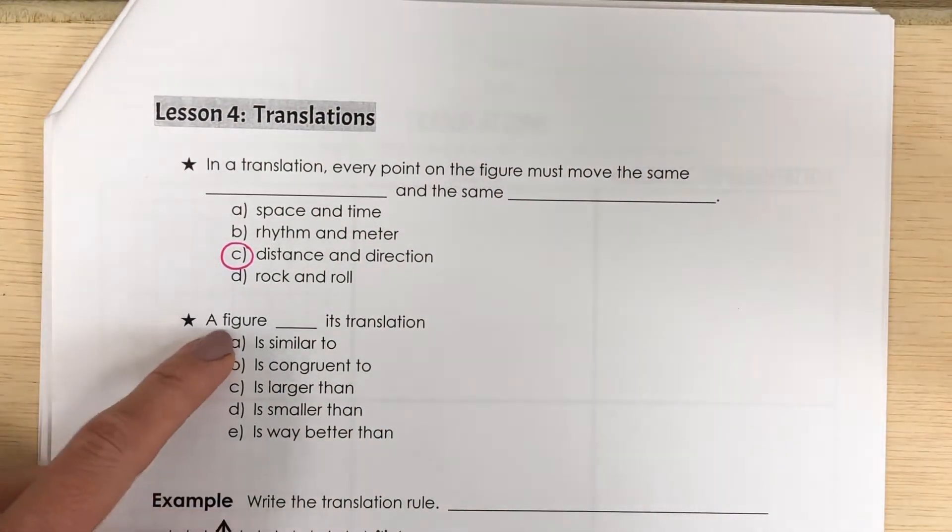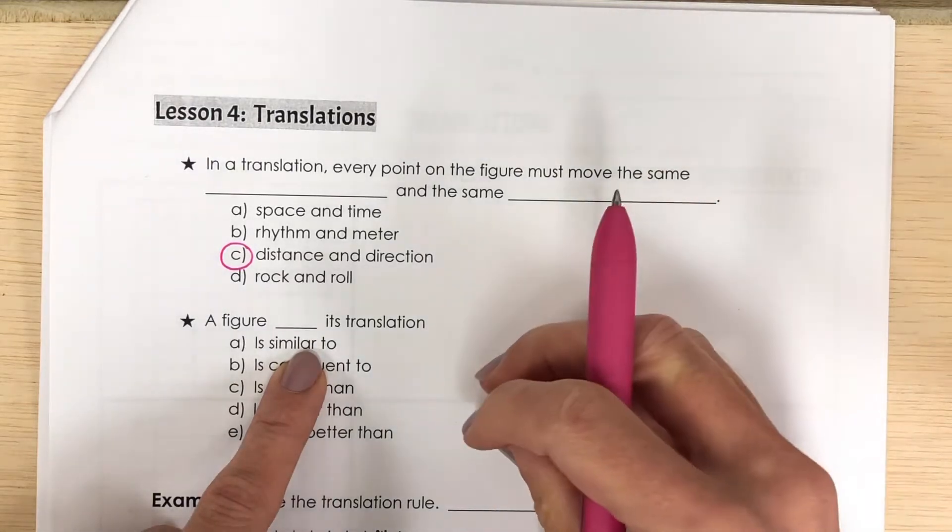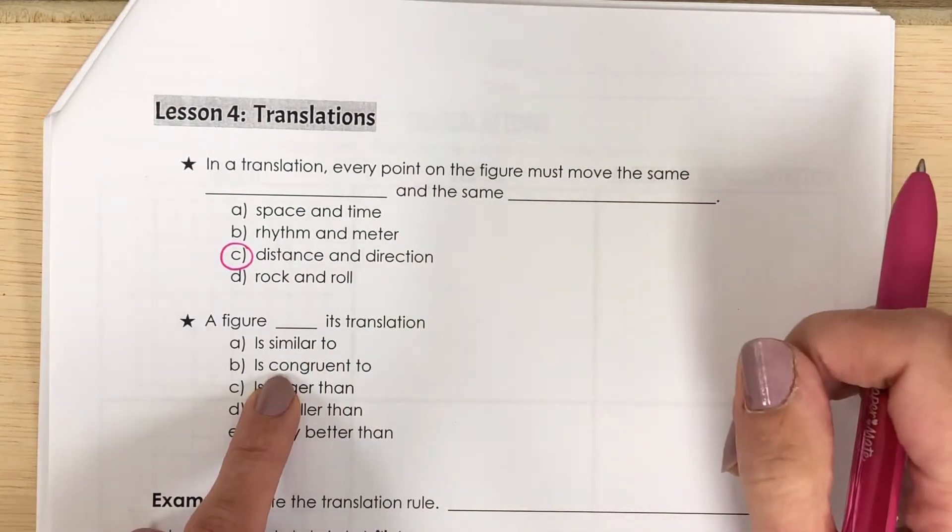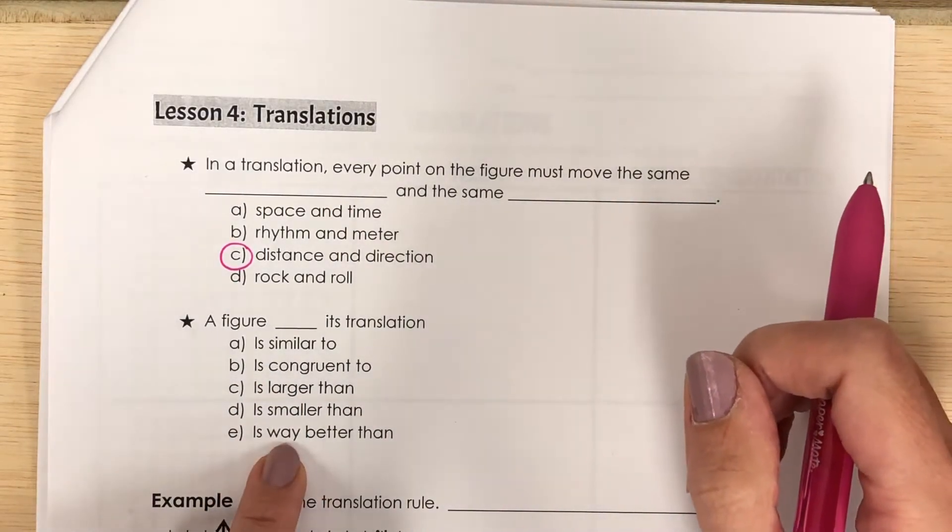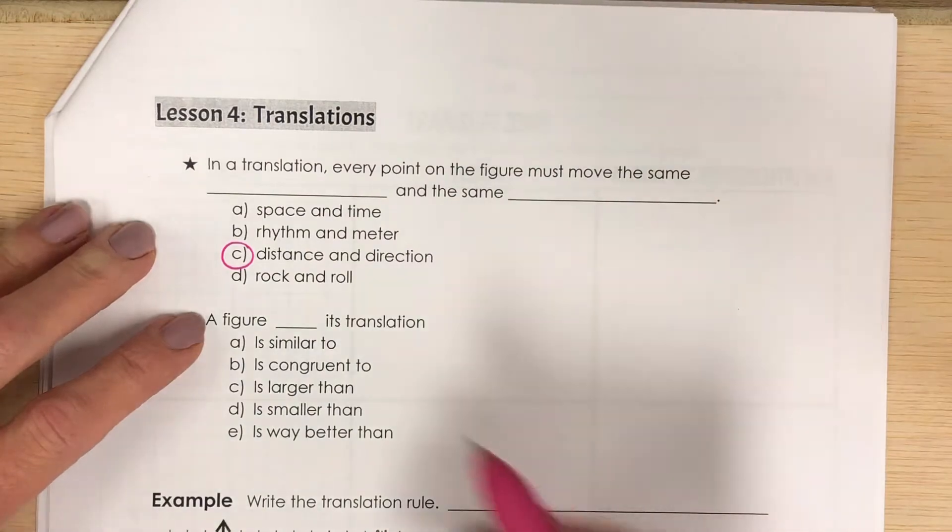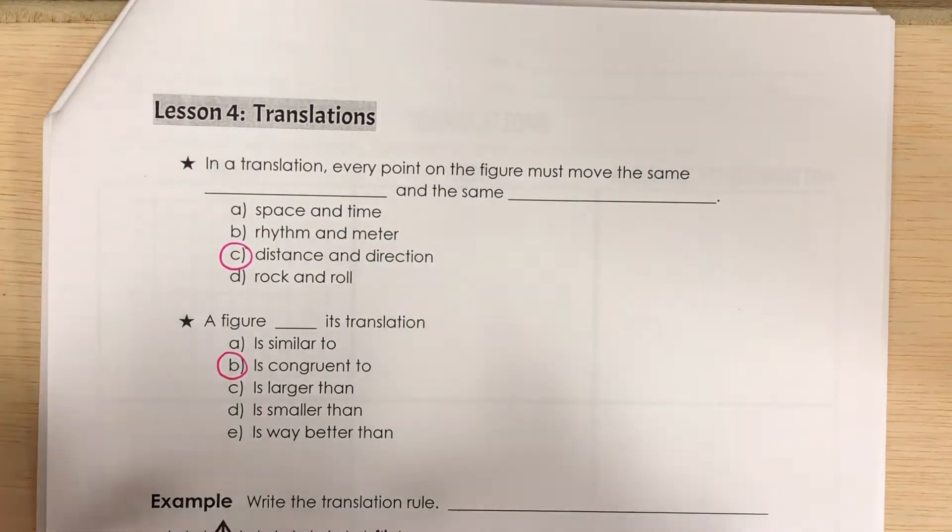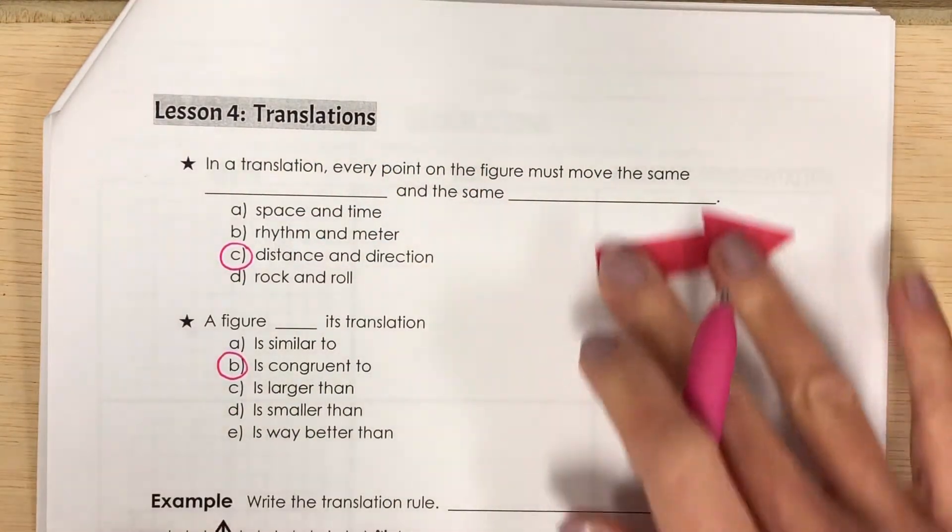A figure is similar to its translation, which means it could be the same, it's the same shape, but maybe not the same size. A figure is congruent to its translation, is larger, is smaller, or is just way better. So in a translation, the pre-image and the image are always congruent. They're always the same shape and the same size, just moved in a different location.